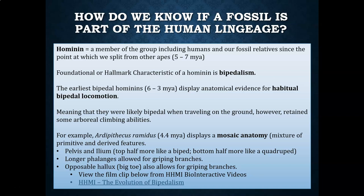However, these early hominins retained some arboreal climbing abilities. An example of a habitual biped would be Ardipithecus ramidus, which dates back about 4.4 million years ago. This fossil displays what we call a mosaic anatomy — a term meaning a mixture of primitive or older traits and newer or more derived traits.